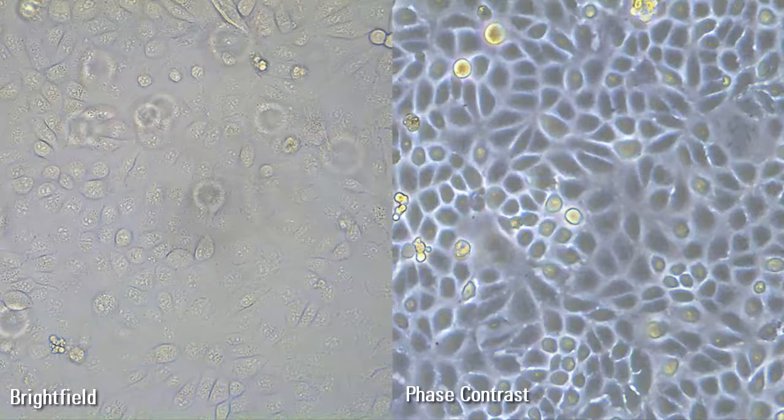On the Leica DMI1 this can be done by simply moving the slider housing the condenser annulus. The phase contrast image gives a better overview and makes inspection of the cell morphology and cell counting easier.